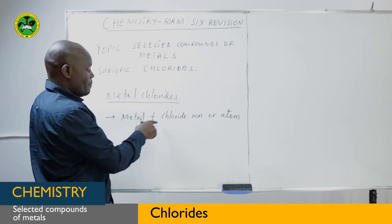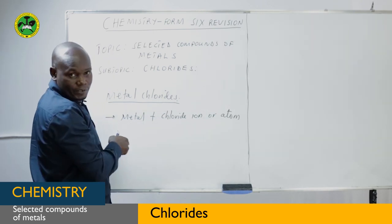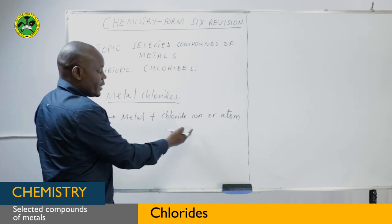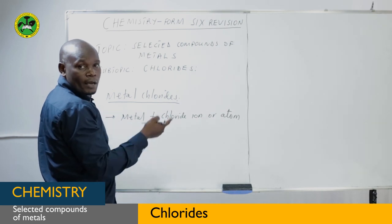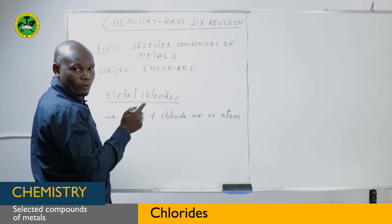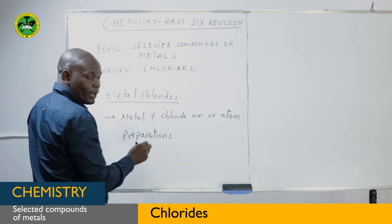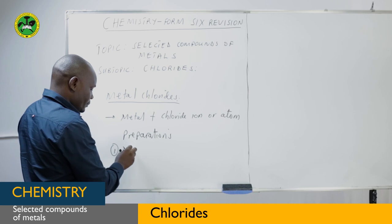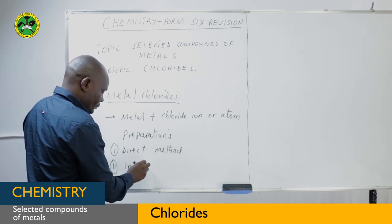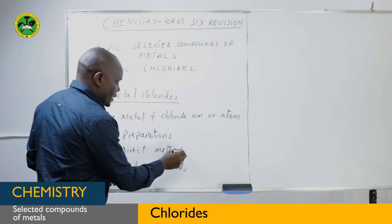When a metal combines directly with the chlorine atom or chlorine molecule, the resulting compound is the metal chloride, and that method is the direct method of preparation. But if a metal combines with chloride ions obtained from any compound, the resulting product is also the metal chloride, and that method is known as the indirect method of preparation. So we have two methods: the direct method and the indirect method.